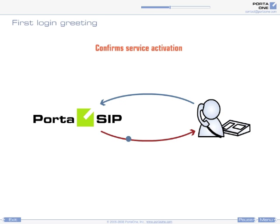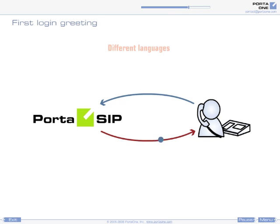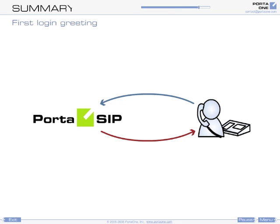This message, which confirms service activation and provides important information about the service, can be customized by you. You may also record different versions of the greeting in different languages, and PortaSIP will play the correct one based on the customer's preferred language settings. The first login greeting allows you to control the process of service activation efficiently.